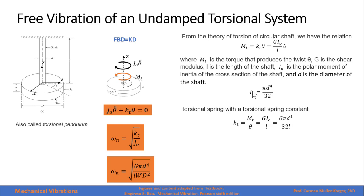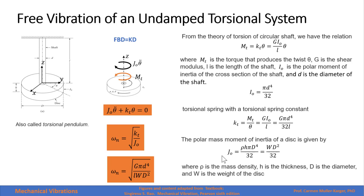We can also define J, the mass moment of inertia of the disc with respect to the center, where rho is the mass density, H is the thickness of the disc, D is the diameter, and W is the weight. This allows us to write the natural frequency in terms of the system variables describing the material, weight, shape of the disc, and shape of the shaft.